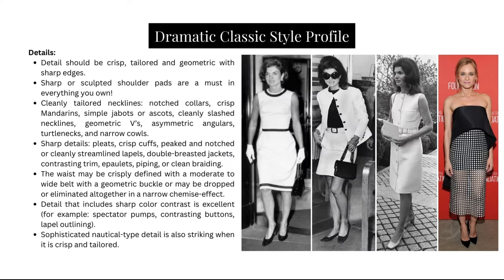Details should be crisp, tailored, and geometric with sharp edges. You want sharp and sculpted shoulders, cleanly tailored necklines, pleats, crisp cuffs, pleated or notched streamlined lapels, double-breasted jackets, contrasting trim and piping. The waist may be crisply defined with a moderate to wide belt with a geometric buckle, or may be dropped or eliminated altogether. Detail that includes sharp color contrast is excellent, and sophisticated nautical-type detail is also striking when it is crisp and tailored.